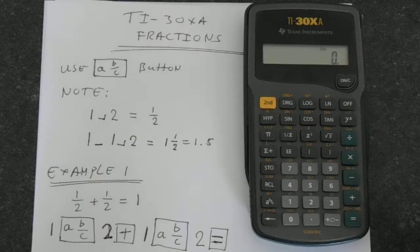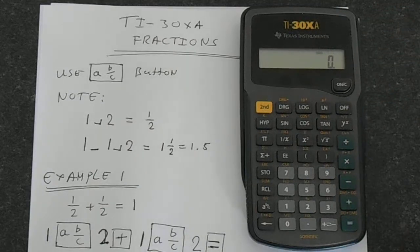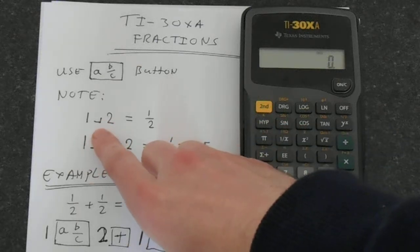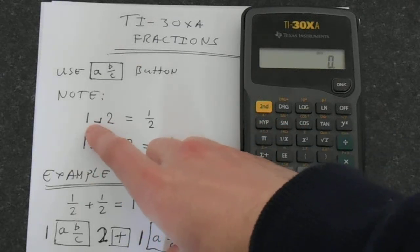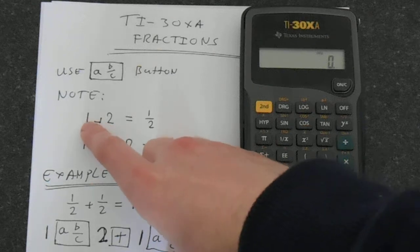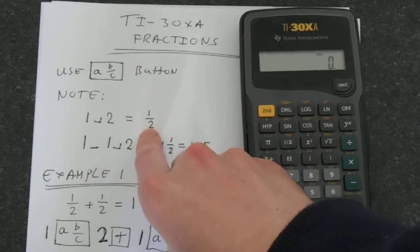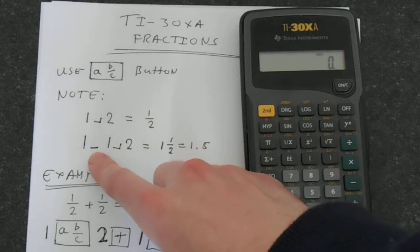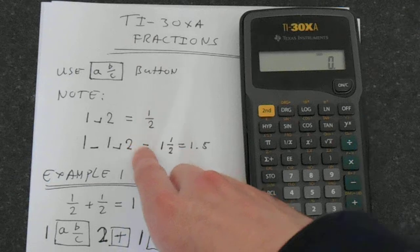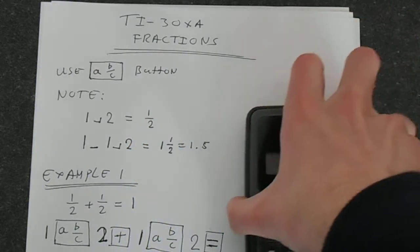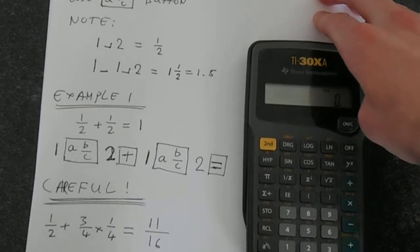You'll notice the display is quite small so you can't actually fit a fraction on as you would with a more advanced calculator. So here we use this notation, this little corner symbol. So 1, this symbol followed by 2 is equivalent to a half. And if we have this straight line here, it's 1 and 1 half, and that is of course 1.5. So let's just jump straight into an example to show you what this calculator can do.